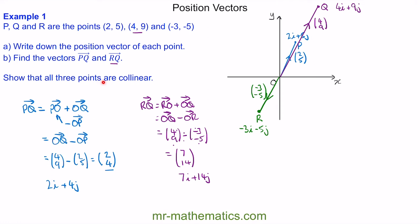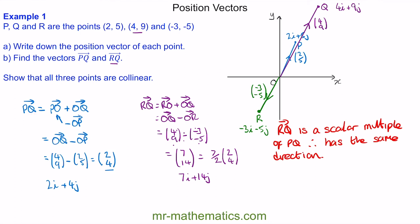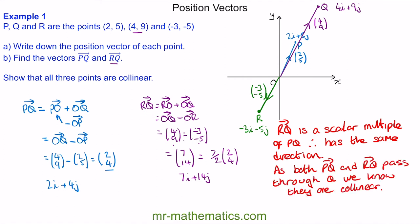Now we've been asked to show that all three points are collinear, meaning they lie along a straight line. Looking at PQ and RQ, we can write RQ as 3.5 times (2i plus 4j) — exactly 3.5 lots of PQ. This tells us RQ is a scalar multiple of PQ, so they travel in the same direction, but RQ is 3.5 times longer. Because both vectors pass through the same point Q, we know they are collinear — they lie along the same line.